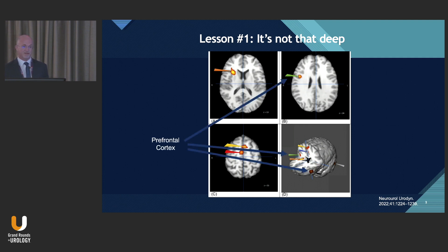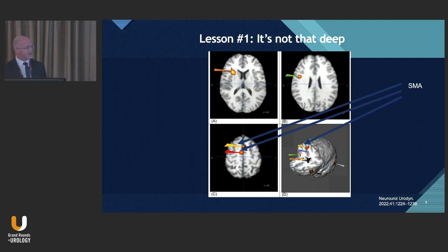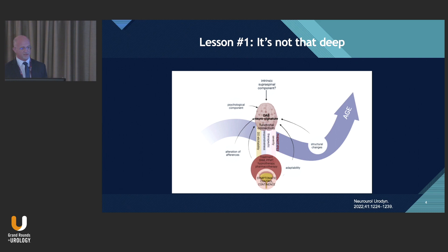The prefrontal cortex, or PFC, receives input from the right insula and inhibits the micturition reflex via activation of the PAG, or periaqueductal gray. The supplementary motor areas, or SMA, are a pelvic floor muscle contraction center — a backup mechanism for continence — and are dually activated with the ACC. Studies have shown that OAB patients with detrusor overactivity have increased activation of the ACC and SMA regions, increasing pelvic floor muscle contraction to counteract urgency. However, they can't maintain continence because the prefrontal cortex is dysfunctional and no longer inhibits the micturition reflex.